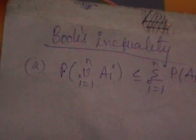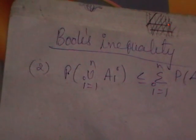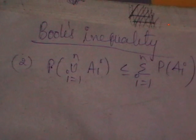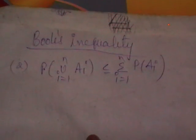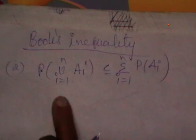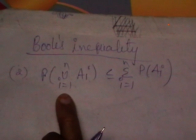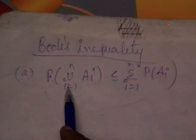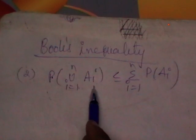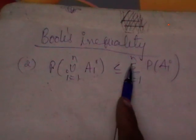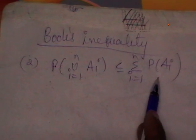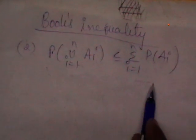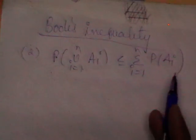We have already discussed the first part of Boole's inequality. Boole's inequality consists of two parts, and we are done with the first part. The second part is: probability of union i equals 1 to n of A_i, less than or equal to sigma i equals 1 to n of P(A_i). This is the second part we are going to prove.